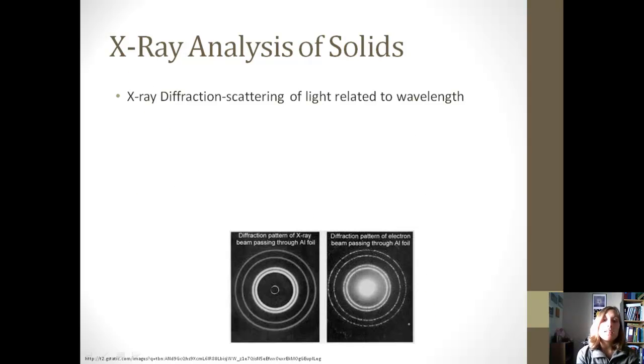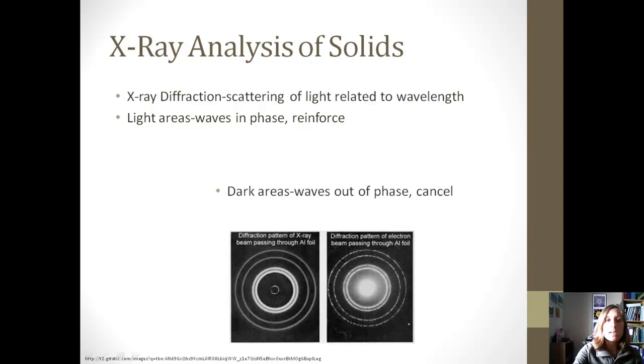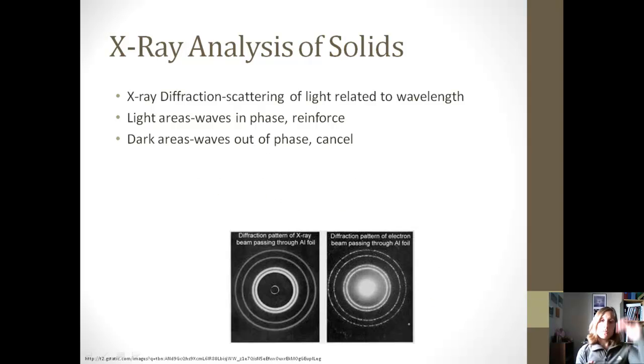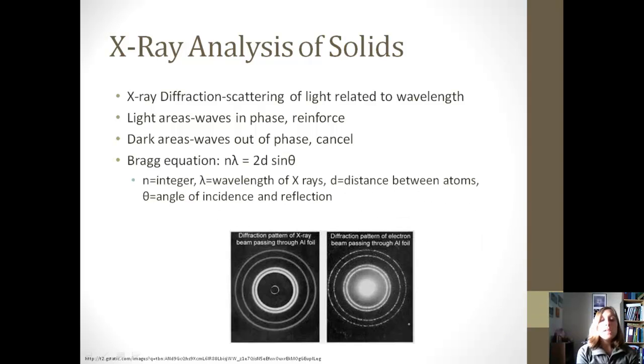We can also look at solids through using an x-ray, and this is called x-ray diffraction. So it's a scattering of light related to the wavelength, and basically where the waves are in phase, which means the peaks and the peaks are lining up, that's getting reinforced, and so those are the light-colored areas, and then the dark areas are where the waves are out of phase. So if we have a peak or a crest and a trough, that would be out of phase, and basically they're going to cancel out.